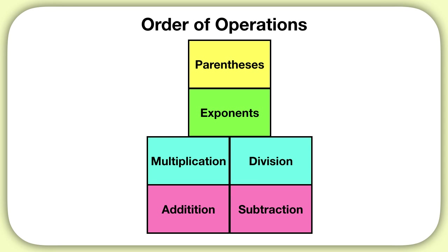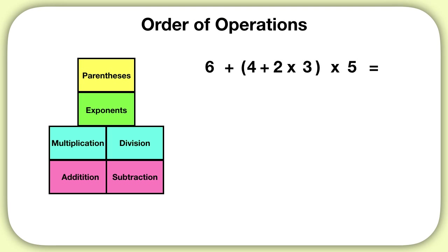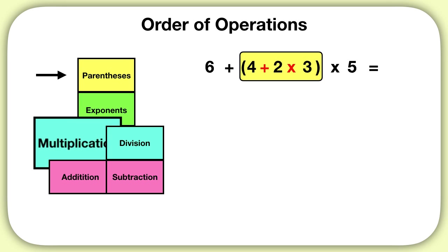Let's use the order of operations to solve this equation. First we look for parentheses, and we see them right here. But inside of these parentheses we see two different operations: addition and multiplication. Inside of the parentheses we follow the same order of operations as for the whole equation, which tells us that multiplication goes before addition, so we will multiply first.